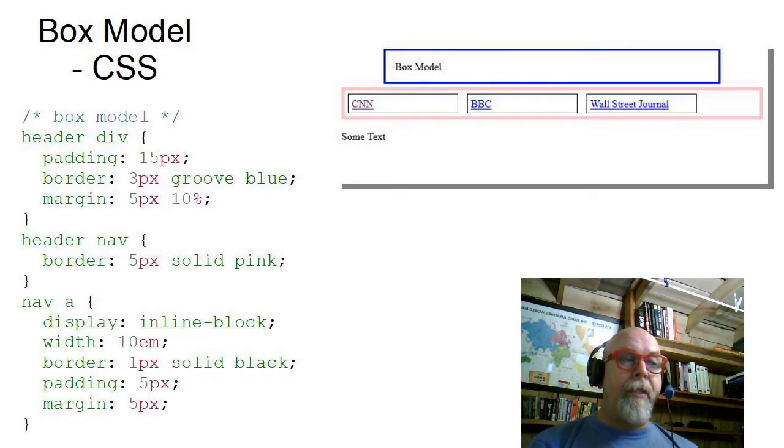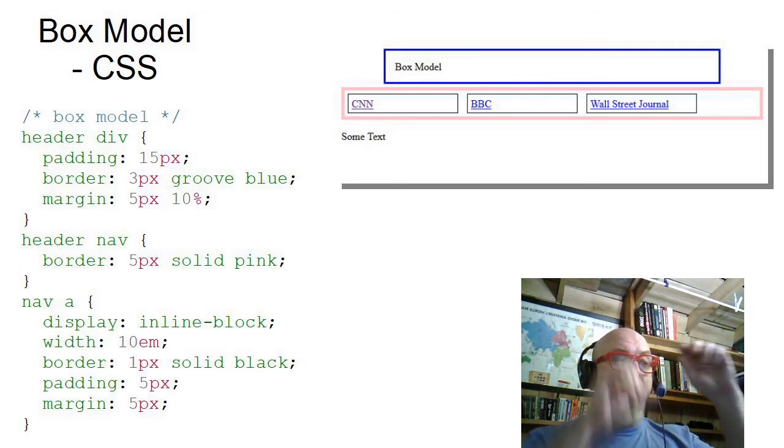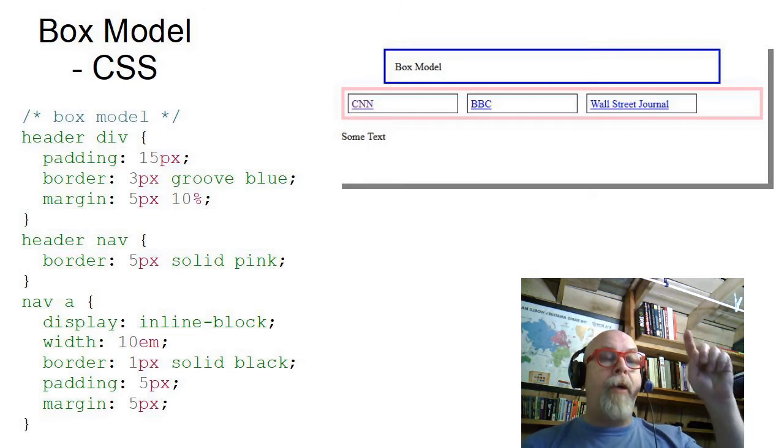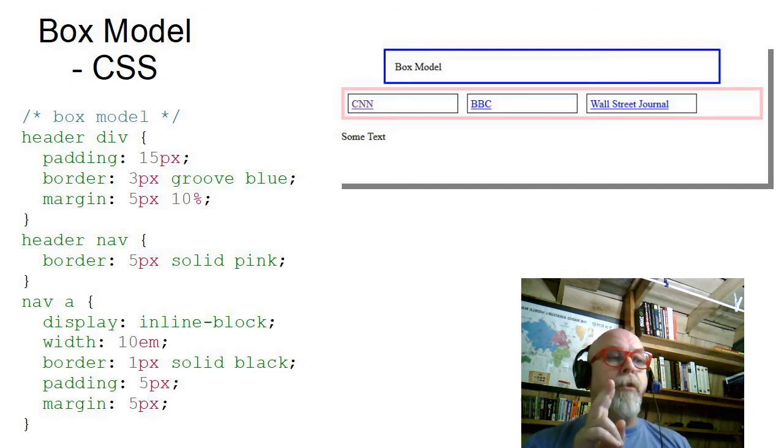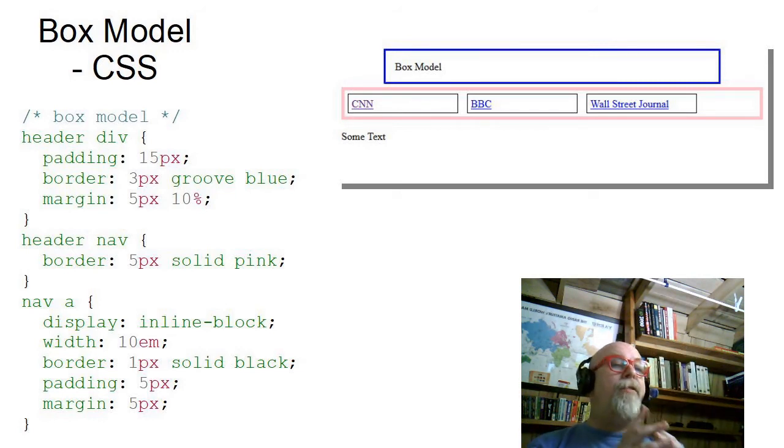So let's look at virtually the same HTML that we used for our last example, but this time I styled it completely differently. The div in the header, which is the text that says box model, I've put a padding of 15 pixels all the way around. So inside the blue box, there's a padding around the text, 15 pixels all the way around. I've also added a three pixel groove blue border around it. So that would be the content, the 15 pixel padding all the way around, the three pixel border all the way around.